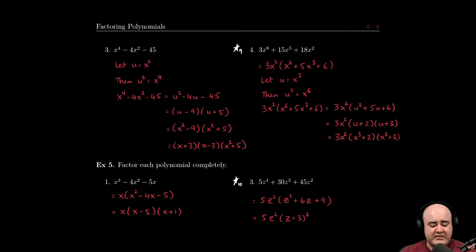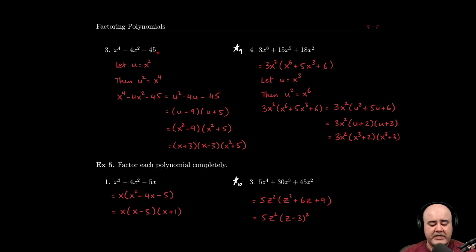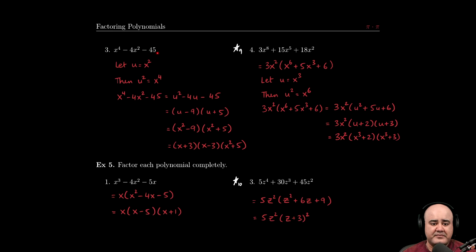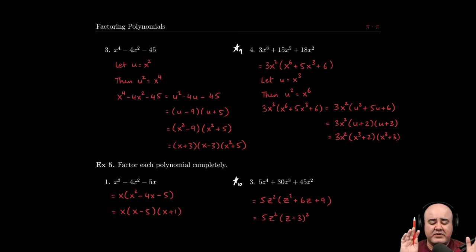One more like this. If we have x to the fourth minus 4x squared minus 45, here again we have three terms and there's a leading coefficient of one, so there cannot be a GCF for the number. This term does not have an x in it, so no variables can be the GCF either. We see that this is the square of the middle term, or the power is twice as high as the power of the middle term, so we do a substitution. As a reminder, there's nothing special about u—you could have used any other variable besides x.